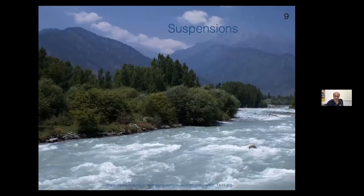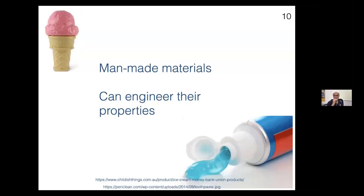Here's a somewhat more complicated system — a fluid with things in it. This is a Himalayan stream. That's a suspension, because the stream carries down organic matter, little pieces of stone, sand. Both the ice cream and the toothpaste are man-made materials, and therefore you can hope to engineer their properties. We'll come back to both these examples at the end — we'll talk about ice cream, toothpaste, what goes into thinking about them, and how their properties are engineered using ideas behind soft matter physics.